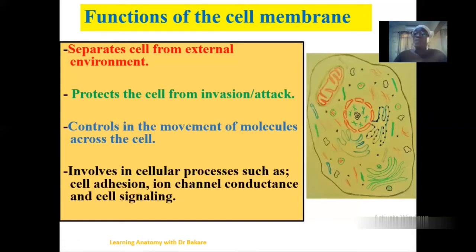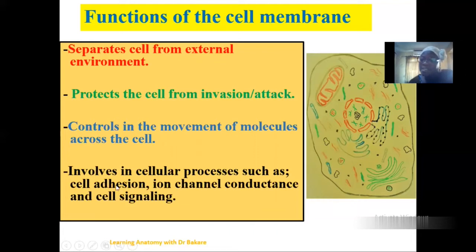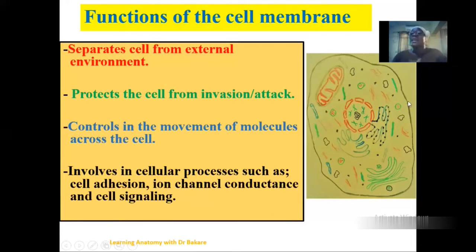The cell membrane is also involved in a number of cellular processes, which include cellular adhesion, ion channel conductance, and cell signaling. In cell adhesion, cells are able to form adhesion with one another through structural proteins on the cell membrane — this is seen during the formation of epithelium. They also allow ion channel conductance, seen mostly in cardiac muscle where ions move from one cell to another through the cell membrane. Cell signaling is exhibited in nerve cells where neural impulses are transported from one cell to the other.